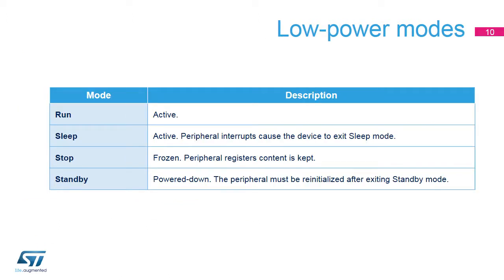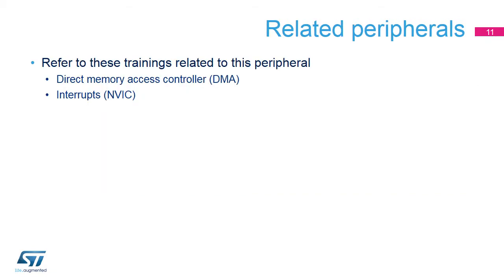Here is an overview of the status of the DCMI module in each of the low power modes. DCMI operations are not possible when the device is in stop or standby mode. This is a list of peripherals related to the DCMI module. Refer to DMA and NVIC trainings for more information about the DCMI channel and interrupt configuration, and to the GPIO chapter for setting up the alternate function pins used by the DCMI. Examples of configuration and use of the camera interface are available in the STM32CubeH7 package available at www.st.com.